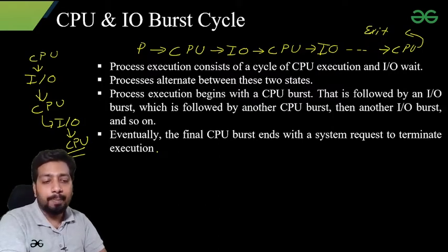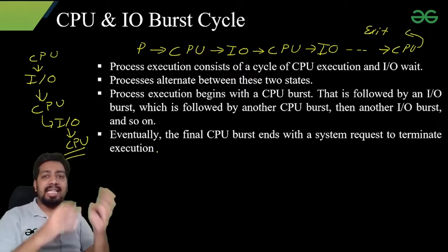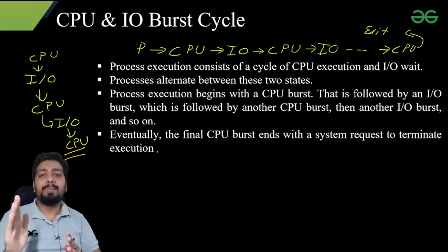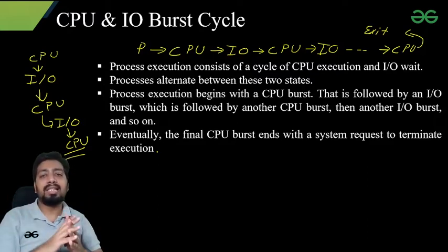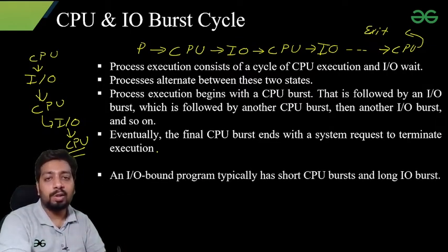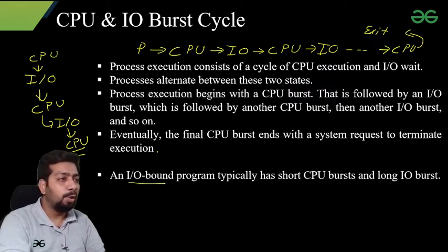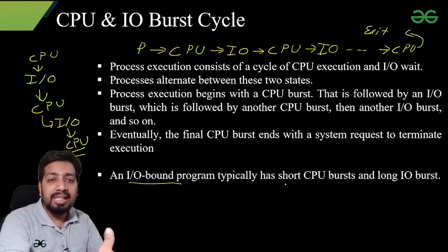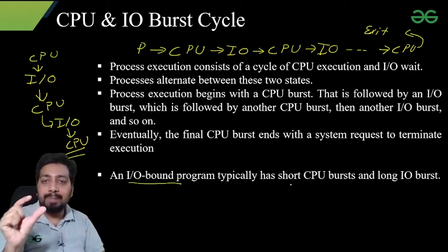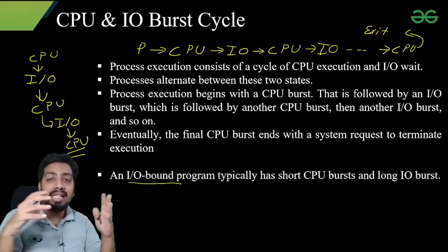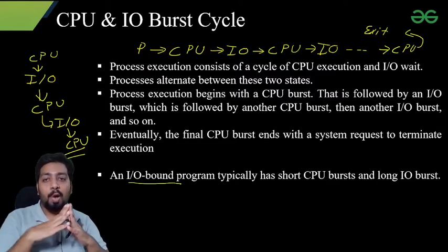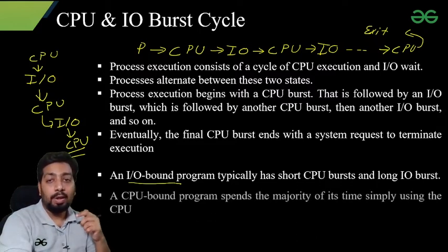Eventually, the final CPU burst ends with a system request to terminate execution — that is the end of a process. A process alternates between CPU burst and IO burst, always initializing with CPU burst and always completing with CPU burst. There are mainly two kinds of programs: one is the IO bound program, which has very short CPU bursts and long IO bursts, meaning the process needs very little CPU time but requires very high IO time.